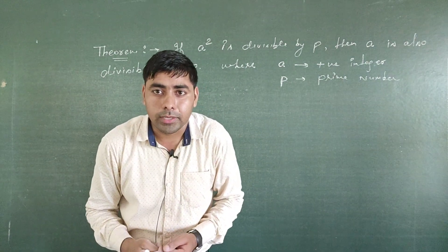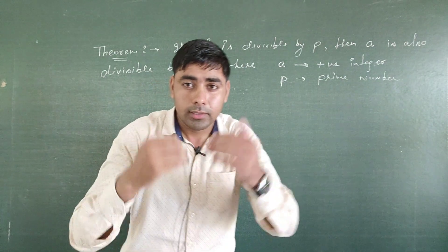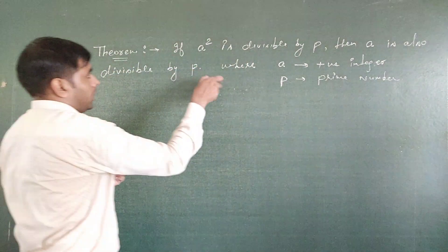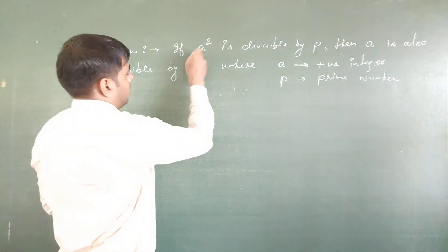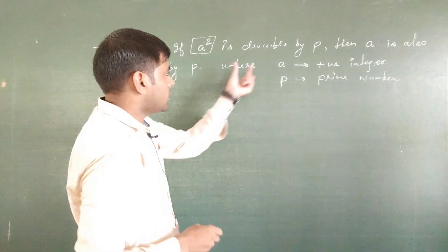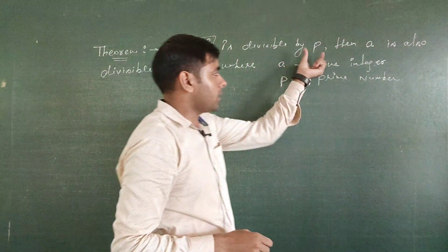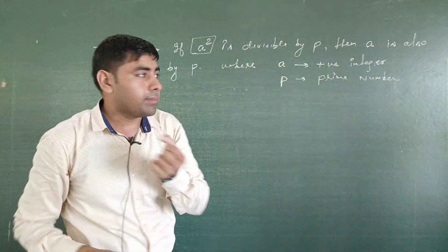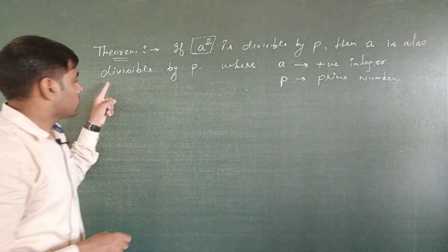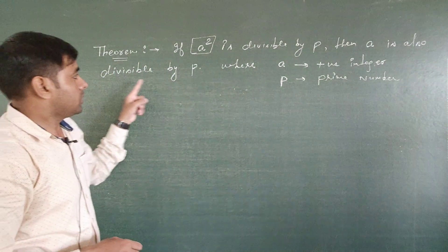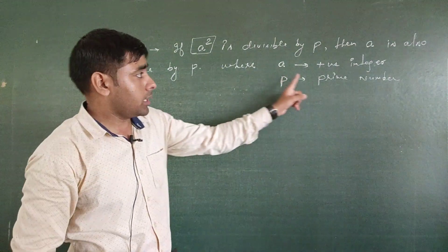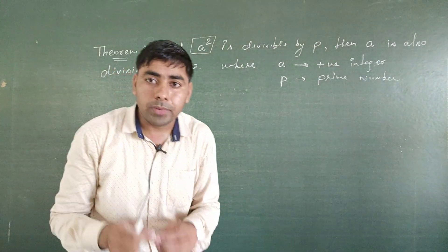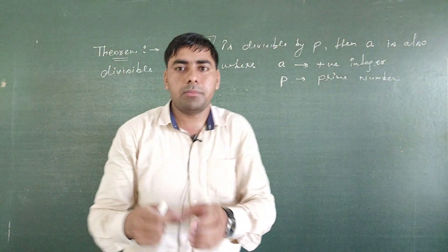This is very important: if a squared is divisible by p, then a is also divisible by p, where a is any positive integer and p is a prime number.